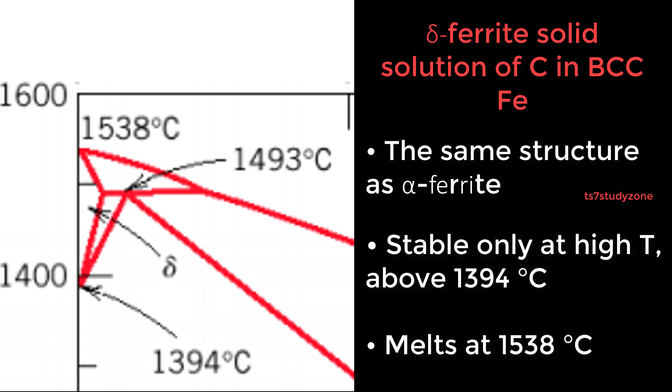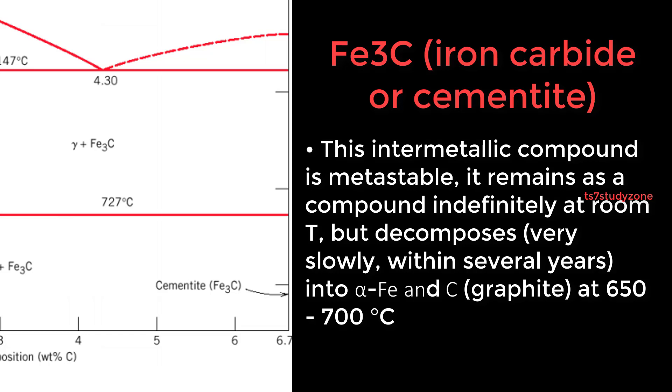Fe3C, iron carbide or cementite, is an intermetallic compound that is metastable. It remains as a compound indefinitely at room temperature but decomposes very slowly within several years into alpha Fe and C graphite at 650 to 700 degrees Celsius.